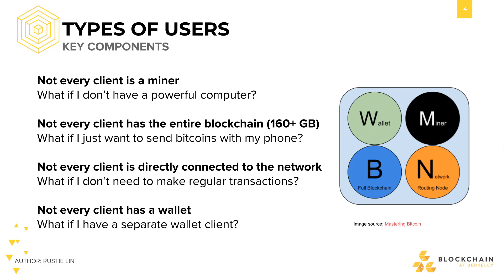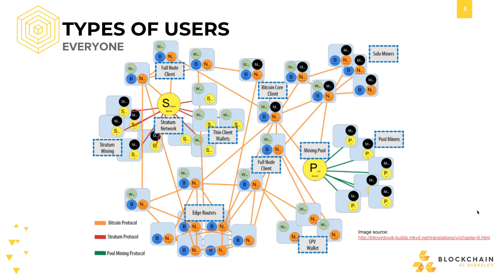And finally, not every client needs to be connected to the Bitcoin network, or even the internet. In actuality, the distinction between different types of users isn't just through these four main functionalities — mining, routing, having a full blockchain, and key management through wallets — but it does summarize a lot about the Bitcoin user experience.